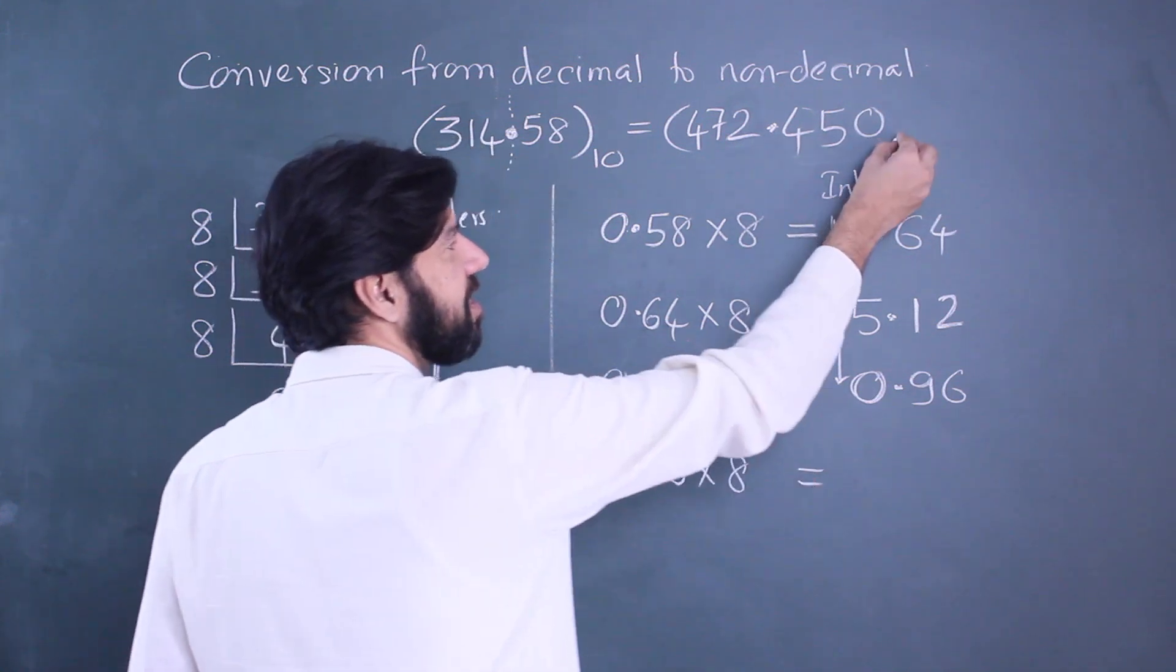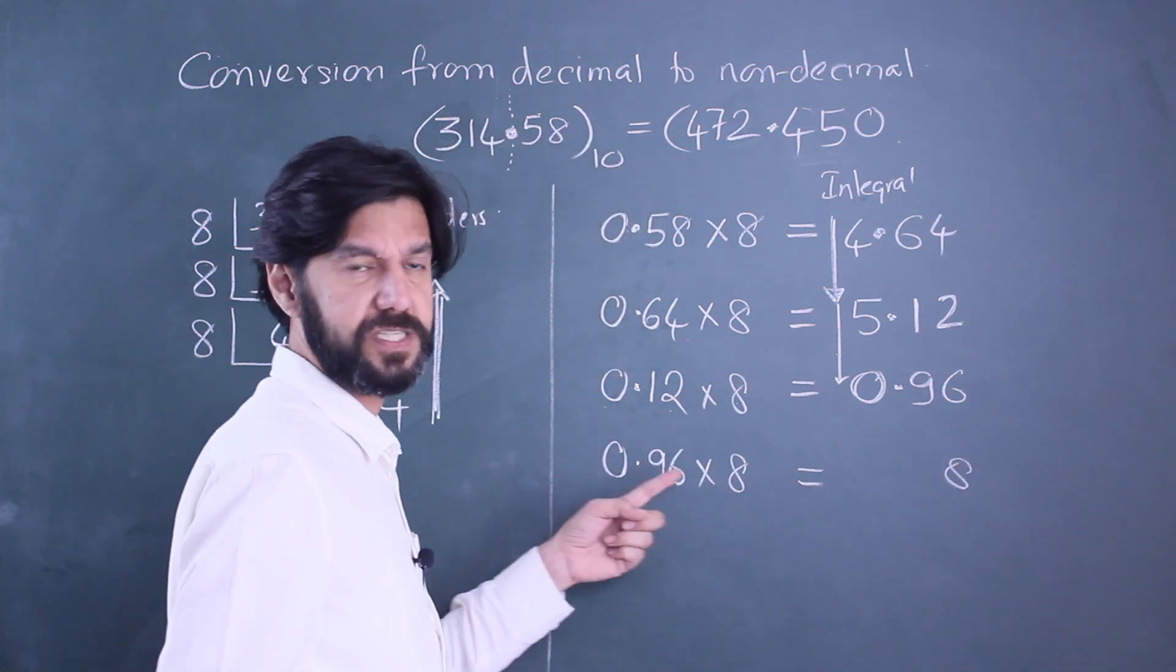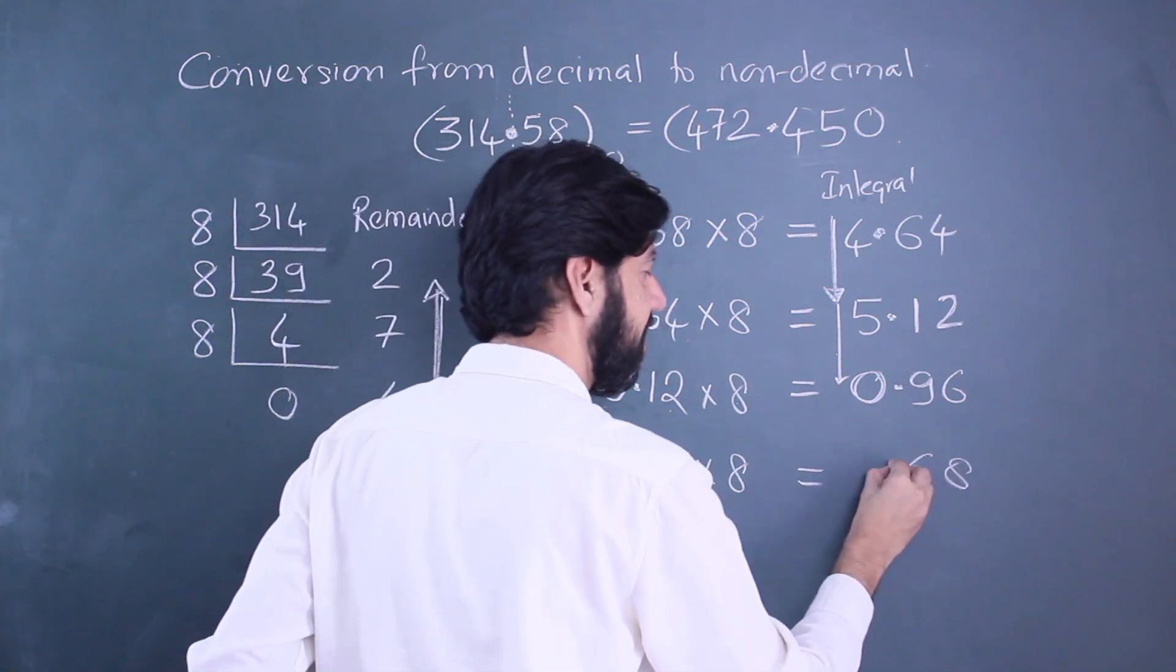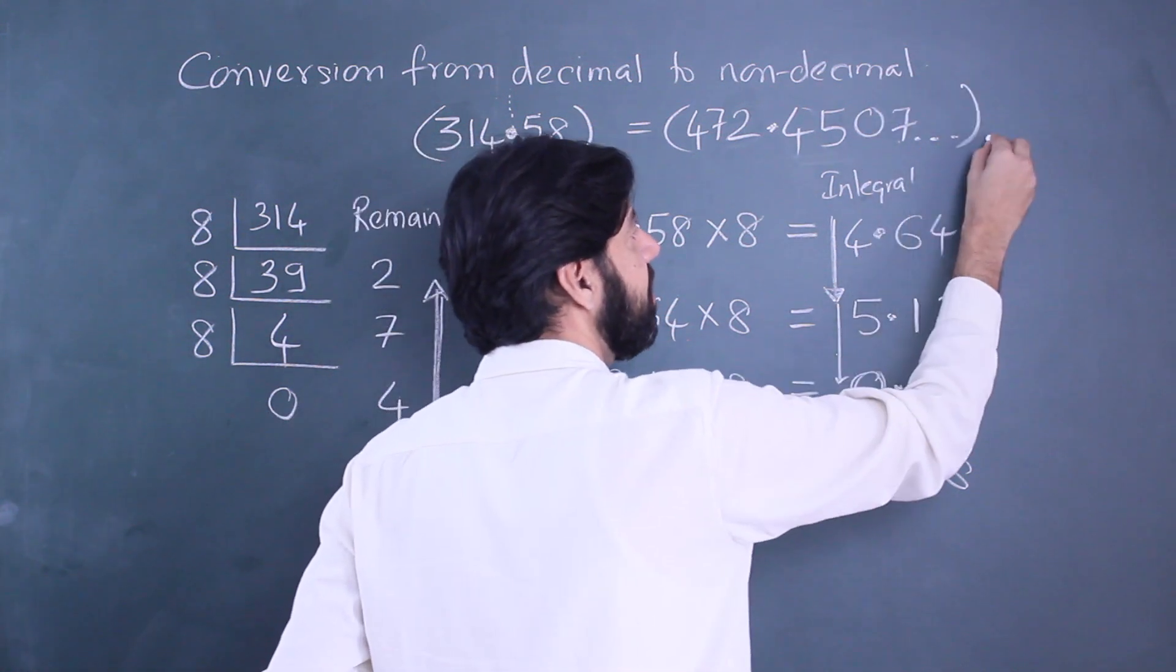Just for the purpose to explain that this process can continue, let me get one more digit. 8 sixes are 48, 4 carry over, 72, 7. So I've got a 7 and this would continue as I said.